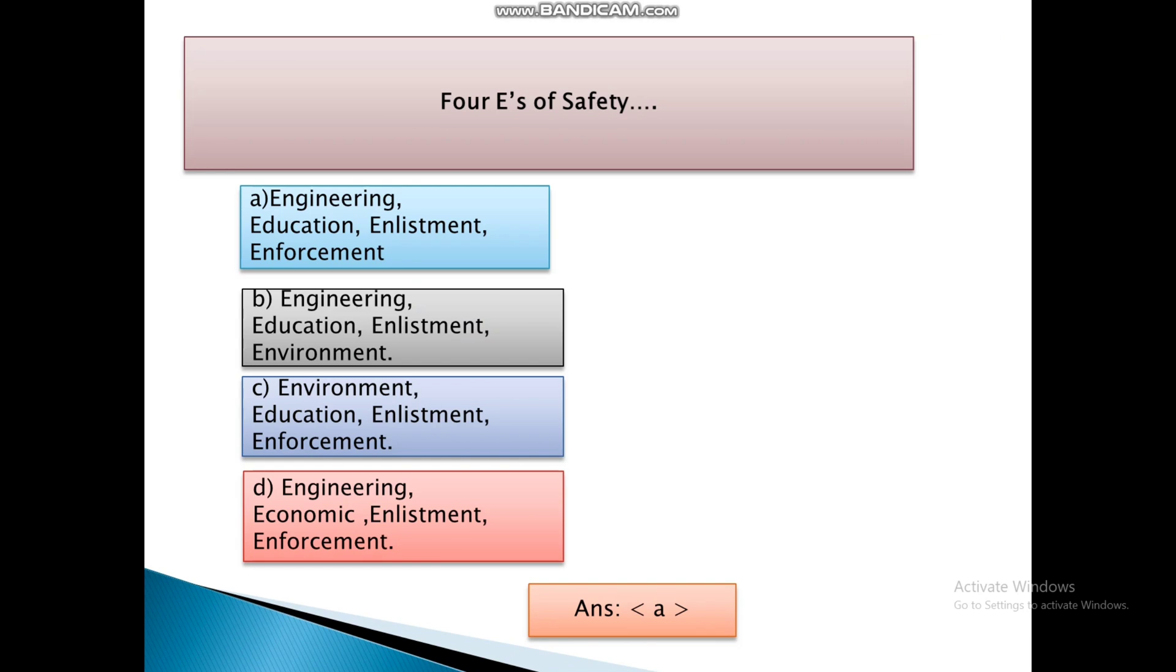Four E's of safety are: First Option, Engineering, Education, Enlistment, Enforcement. Second Option, Engineering, Education, Enlistment, And Environment. Third, Environment, Education, Enlistment. And Fourth, Engineering, Economic, Enlistment, Enforcement. And the answer is A, that is four E's of safety are engineering, education, enlistment, and enforcement.